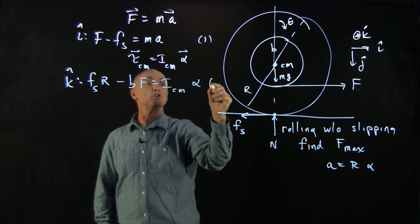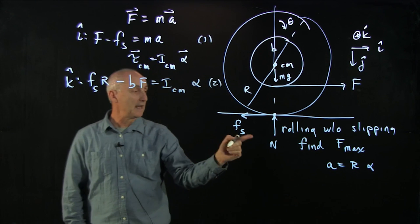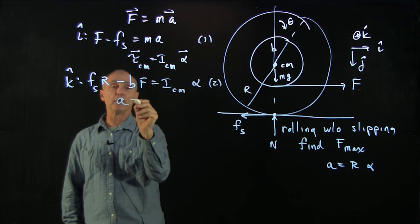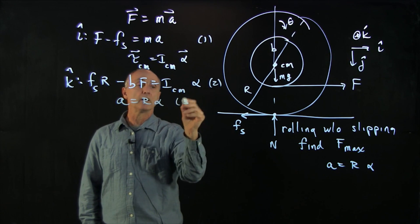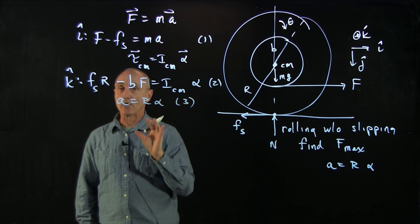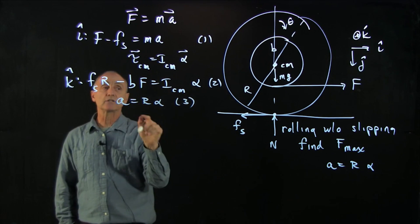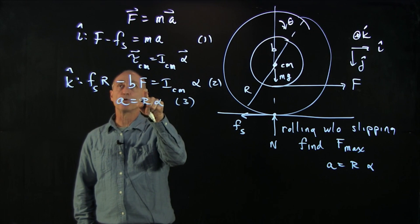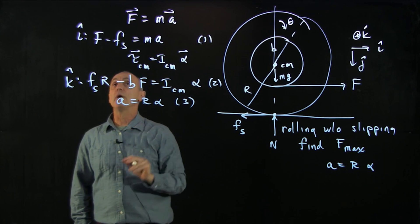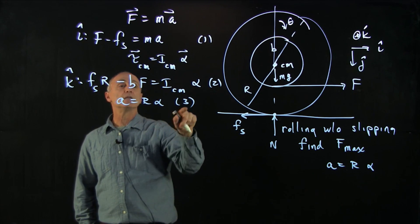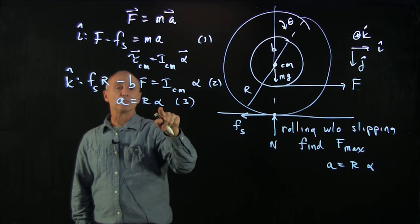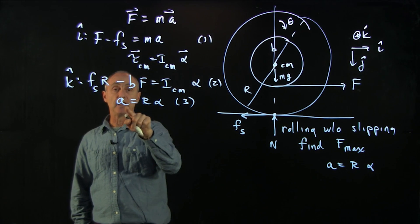So we have our two dynamic equations. And again, let's recopy our rolling without slipping condition now expressed in terms of acceleration. So now what I'd like to do is solve for this force, f.